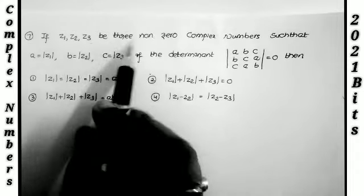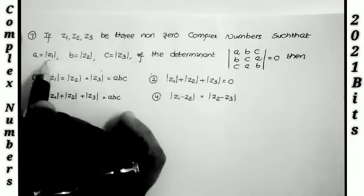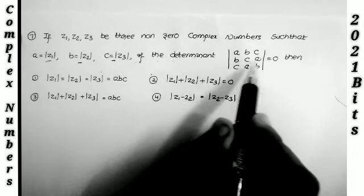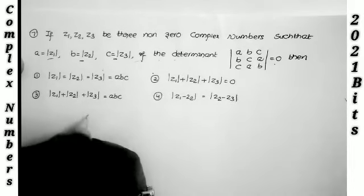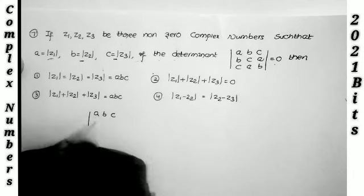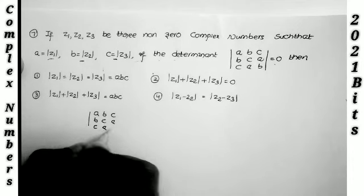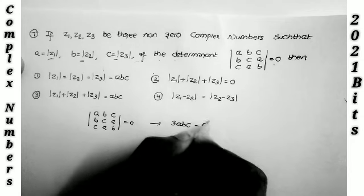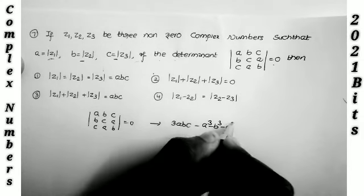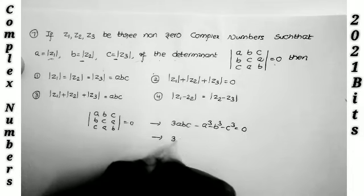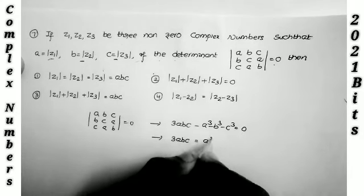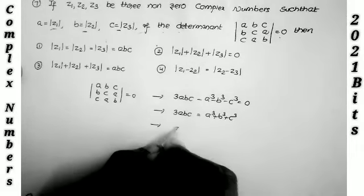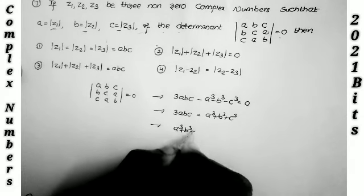Next: z₁, z₂, z₃ are non-zero complex numbers with a = |z₁|, b = |z₂|, c = |z₃|. Given that the determinant of [[a,b,c],[b,c,a],[c,a,b]] = 0. The determinant equals 3abc − a³ − b³ − c³ = 0, which means a³ + b³ + c³ = 3abc, or equivalently a³ + b³ + c³ − 3abc = 0.